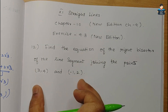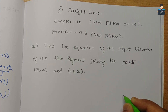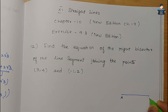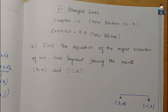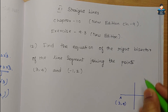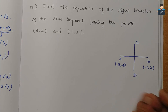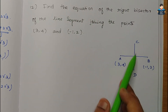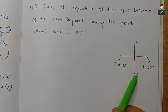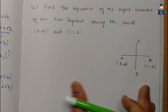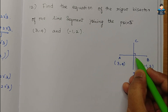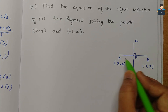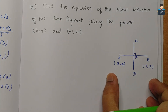So we have a line segment joining points A(3, 4) and B(-1, 2). The right bisector is line CD, and we need to find the equation of line CD — that is the perpendicular bisector of AB. First, we find the midpoint of AB using the midpoint formula, and we call that point P.